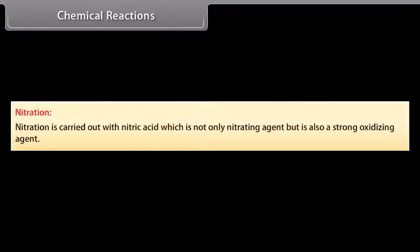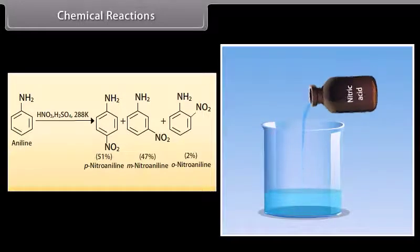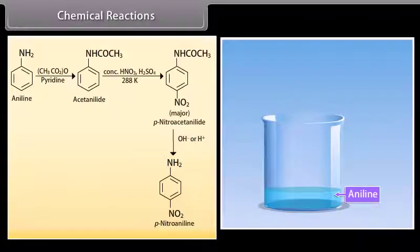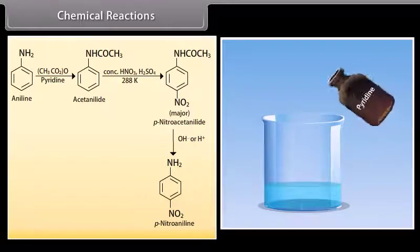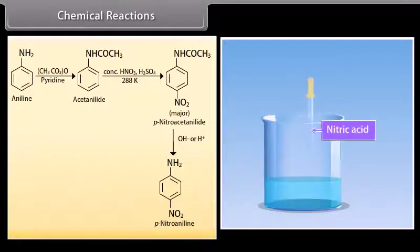Nitration: Nitric acid is not only the nitrating agent but also a strong oxidizing agent. Therefore, direct treatment of aniline with nitric acid leads to oxidation of the highly activated benzene ring, resulting in complex tarry oxidation products. Nitration of aniline can be controlled by protecting the NH2 group by acetylation. Aniline reacts with acetic anhydride and pyridine to form acetanilide, then concentrated nitric acid and sulfuric acid at room temperature give para-nitroacetanilide, which on hydrolysis produces para-nitroaniline.